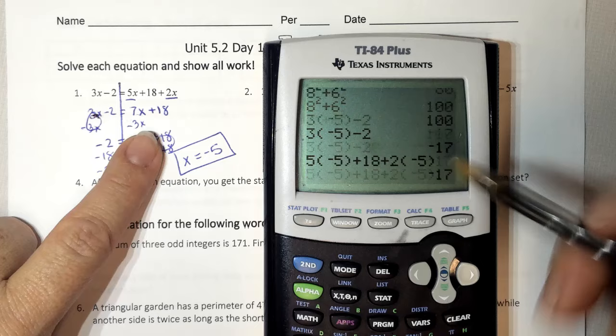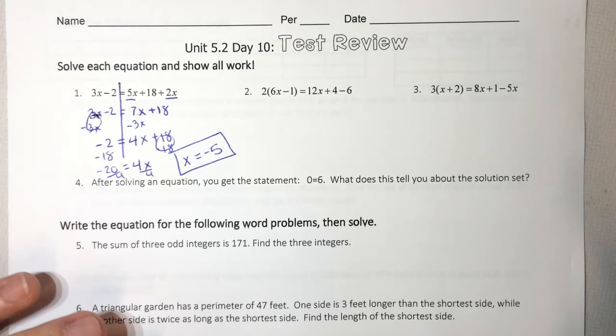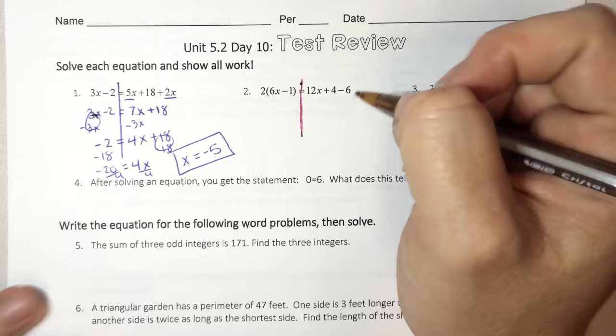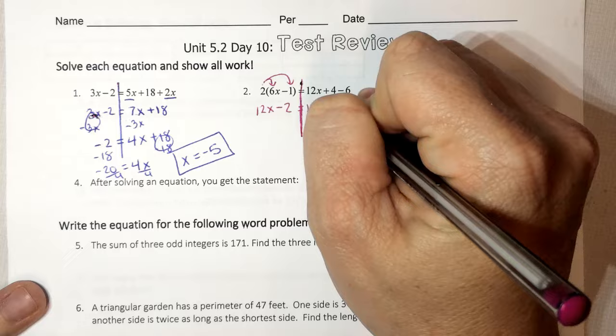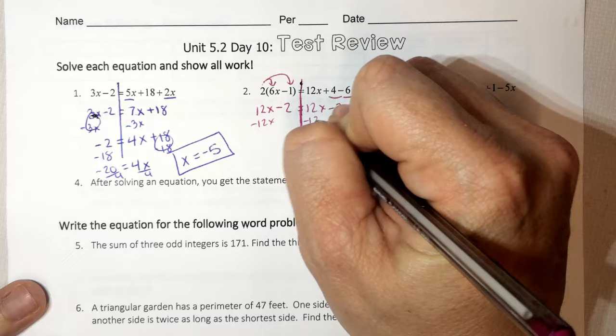Next one, same concept. I'm going to solve. So I have to simplify both sides. Both sides need to be simplified. This gives me 12x minus 2. This gives me 12x minus 2. Well, they're the same. And if you notice they're the same, you know that when I subtract 12x from both sides, they're both going to cancel. And I get negative 2 equals negative 2.